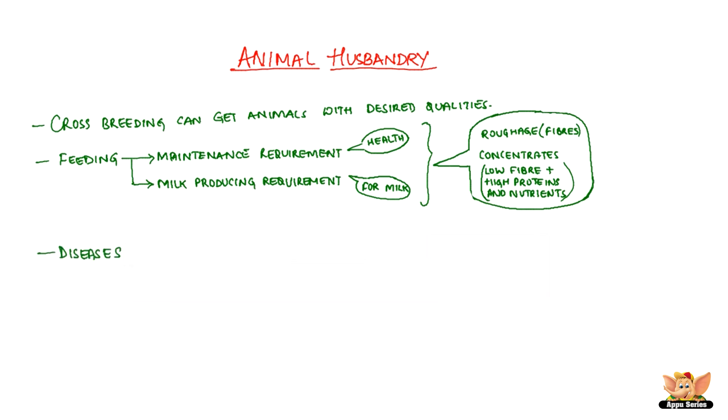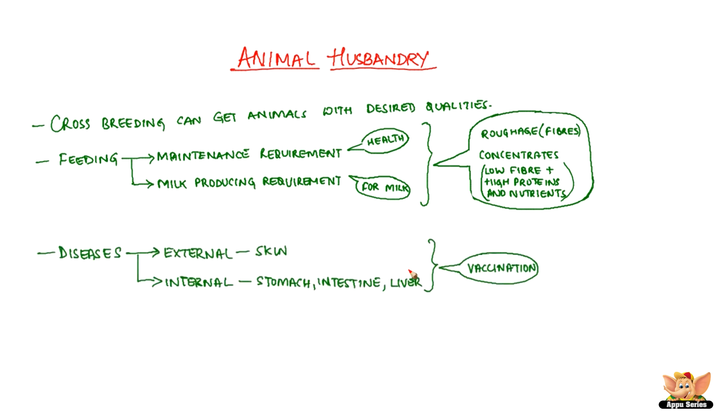Cattle can suffer from many diseases. These could be external, which affect the skin, or internal, which affect the stomach, intestines, and liver. Vaccinations are given against many viral and bacterial diseases.